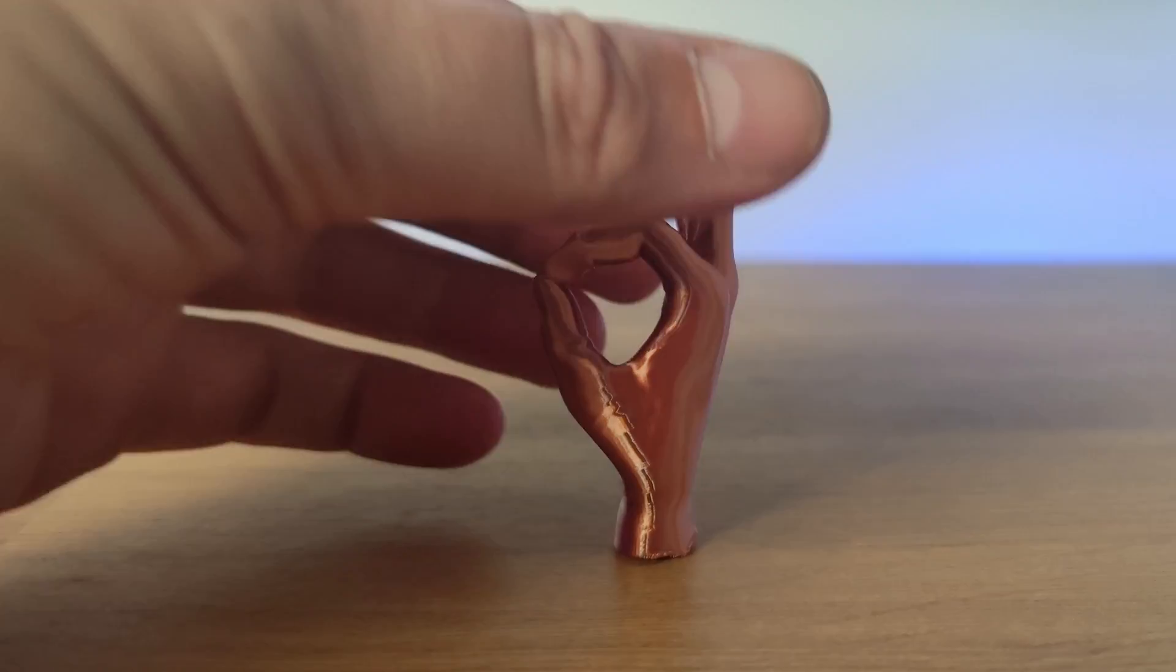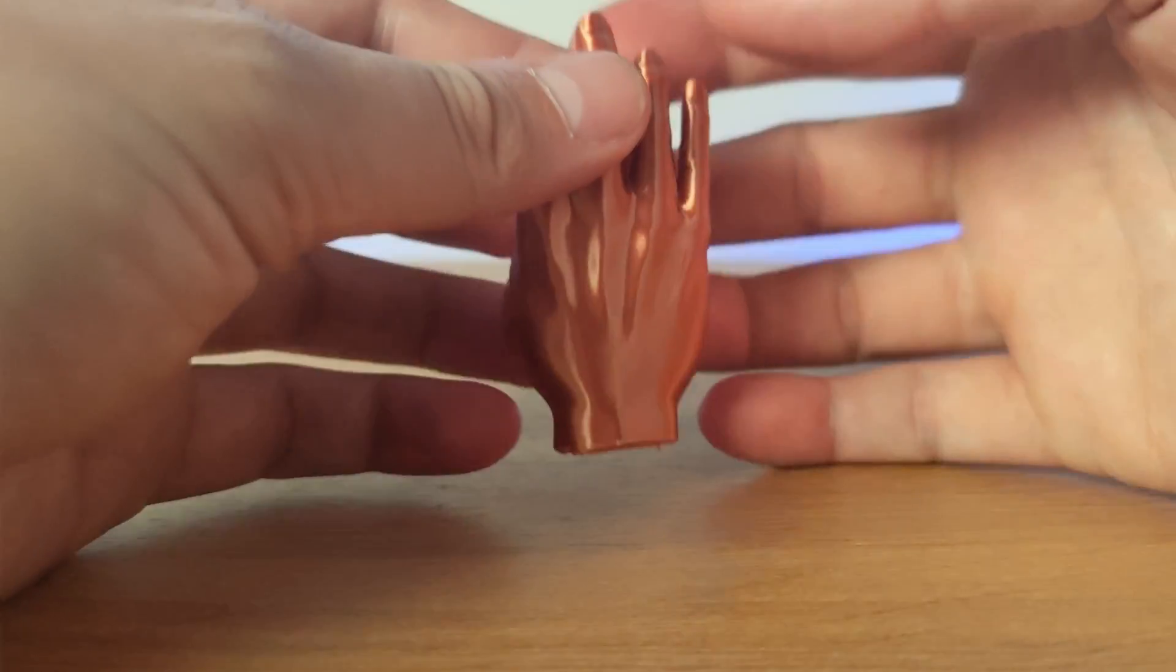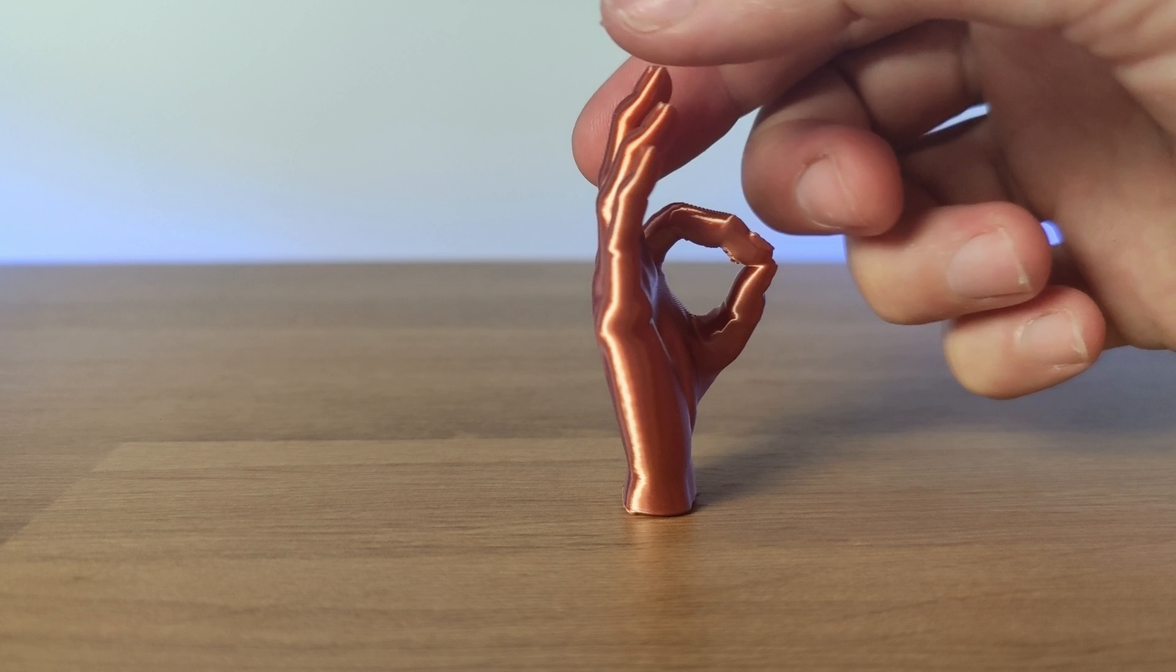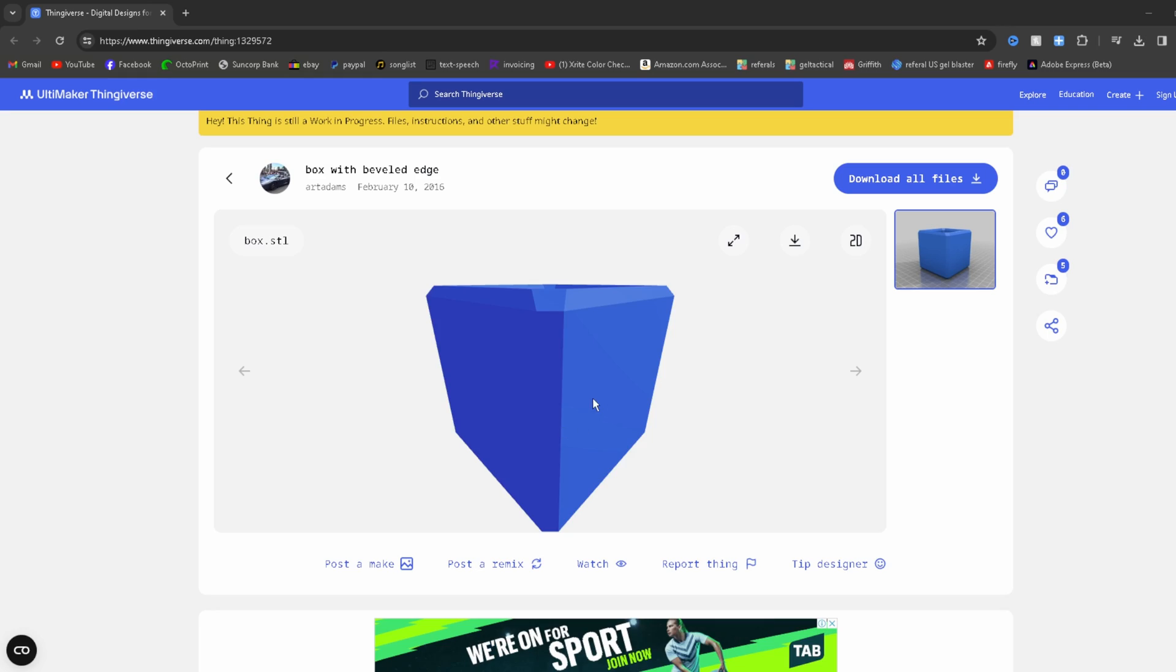Now as you can see, the edge is barely noticeable on this model, but if this edge doesn't look very good on your 3D model, try incorporating it into the rest of the object to help the edge blend in a bit more.